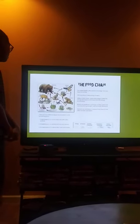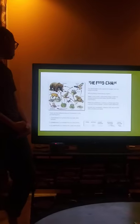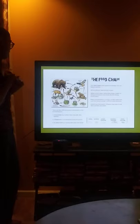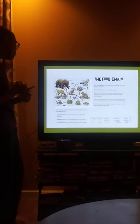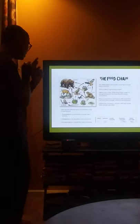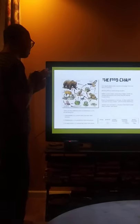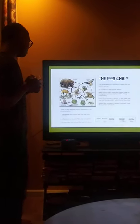There are four different types of consumers in the animal kingdom. A carnivore is an animal that only eats other animals. A herbivore is an animal that only eats plants. And an omnivore is an animal that eats both plants and animals.